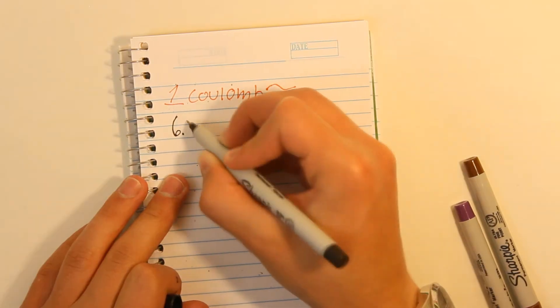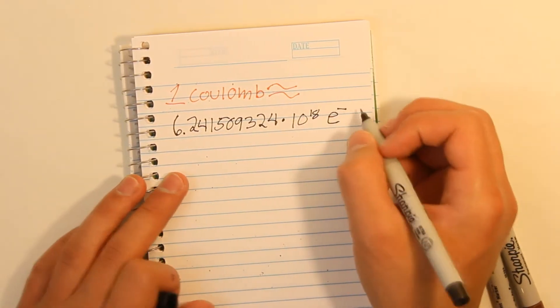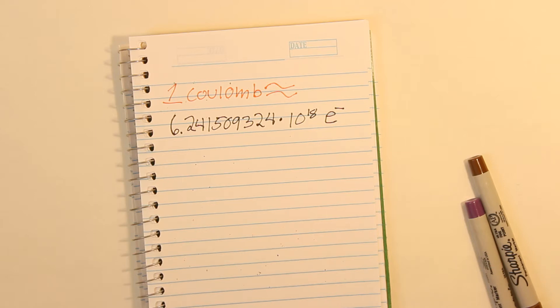That doesn't help? Well here, a coulomb is roughly 6.241509324 times 10 to the 18th electrons. So, one amp is equal to around 6.241509324 times 10 to the 18th electrons moving across a conductor per second.